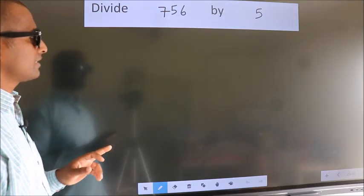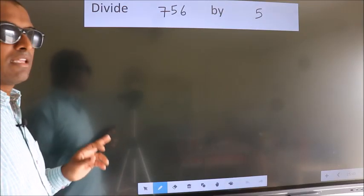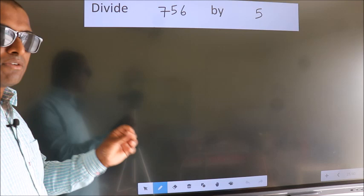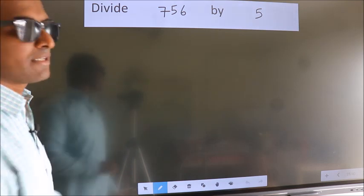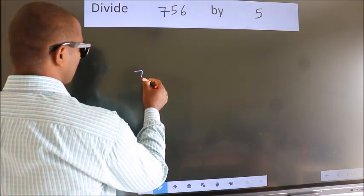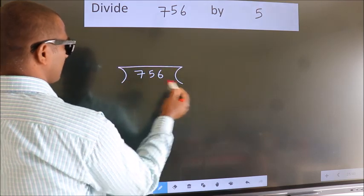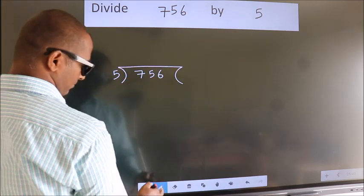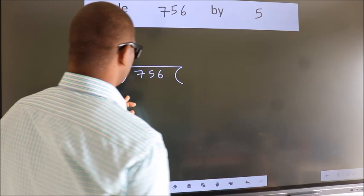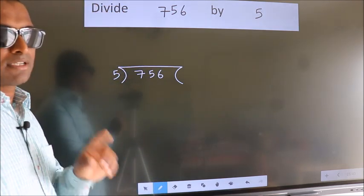Divide 756 by 5. To do this division we should frame it in this way. 756 here, 5 here. This is your step 1.